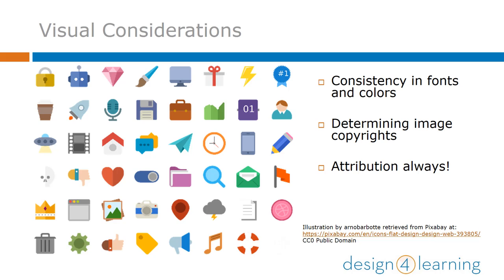In week 1, you learned about the importance of contrast, but consistency is equally as important. It can be really distracting to some learners to see a mix of fonts and sizes or too many competing color choices. Once you've drafted your content visuals, it's always a good idea to look at them for consistent sizing and placement, and for images that don't distract from your point but elevate it.